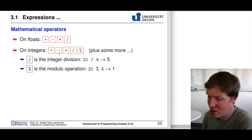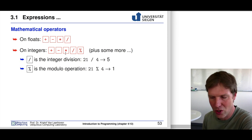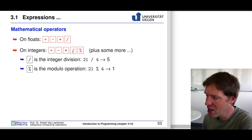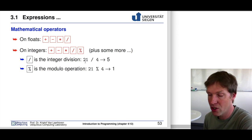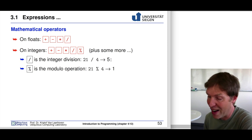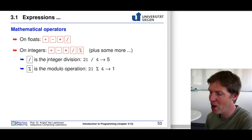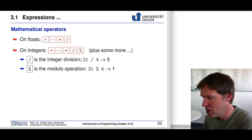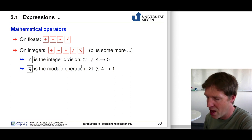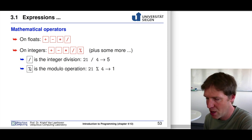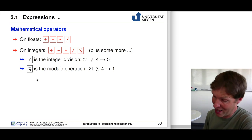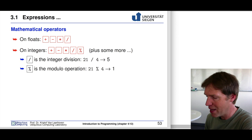If you have 10 plus 10, you get 20; or 20 minus 30, you get minus 10. Multiplication is also fairly simple. Division is a little less intuitive: if you have 21 divided by 4 and both are integers, the result will be 5 — the remainder is left away because this is integer division. There is also the modulo operation for integers, where the remainder is given after dividing 21 by 4.